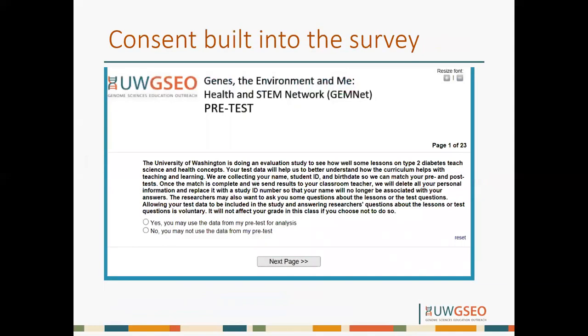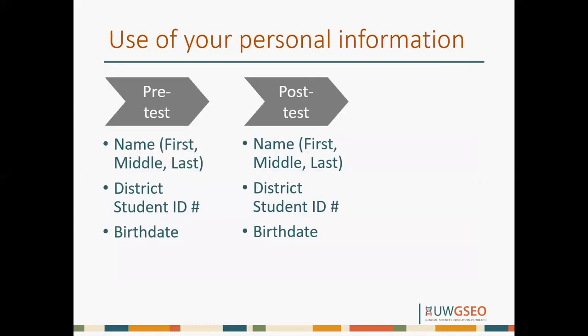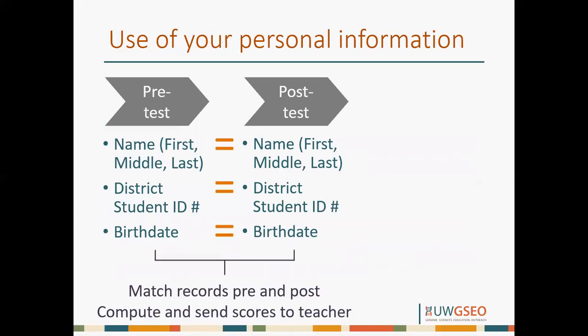The consent is built right into the survey, and this is what the first page of the test looks like. After reading the information, you can check yes or no. We do collect some personal information on the test, such as your name, your district ID, and your birth date. We use this to match your pre-test with your post-test. Once these records are matched, we then send the scores to your teacher.